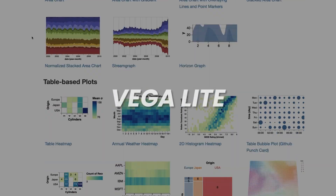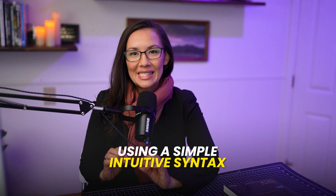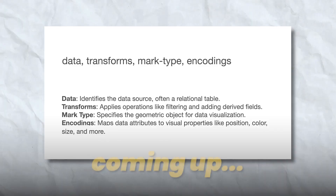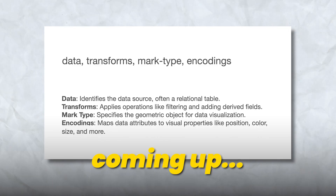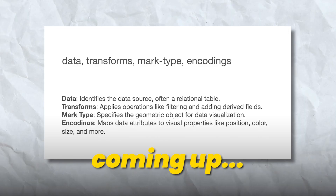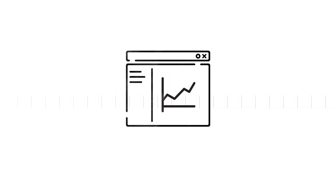Welcome to this video on Vega-Lite grammar of graphics. Vega-Lite is a high-level visualization grammar that allows you to create visualizations using a simple and intuitive syntax. In this tutorial, we'll dive into the fundamental concepts of Vega-Lite grammar of graphics and learn how to create a variety of visualizations using the grammar.